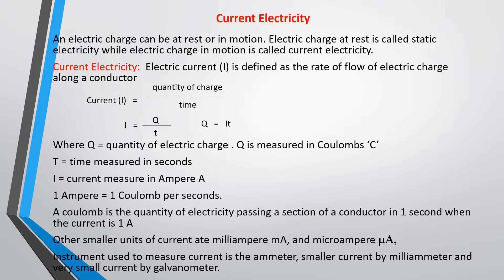We talked about charge and said that an electric charge can either be at rest or in motion. An electric charge that is at rest is called static electricity — that was what we discussed before. An electric charge that is in motion is called current electricity, and that is what our discussion is going to focus on in today's class.